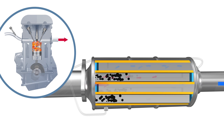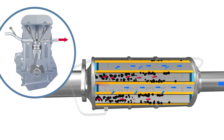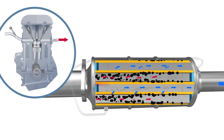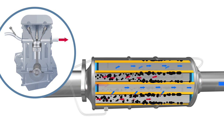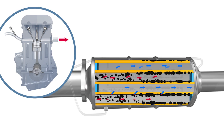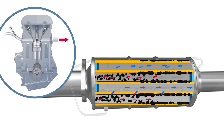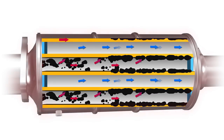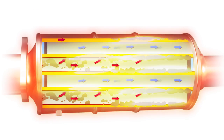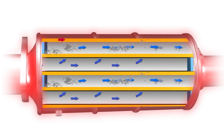Untreated exhaust gases leave the cylinders carrying the particulates to the DPF. They come into contact with the microscopic channel walls and the soot is trapped. The soot remains in the DPF until the regeneration process is initiated.